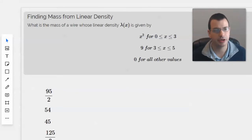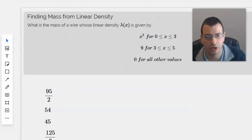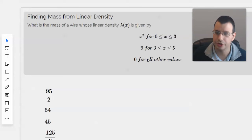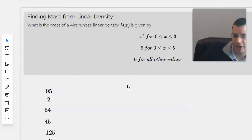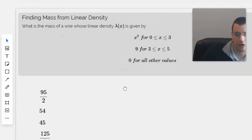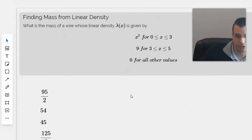Finding mass from linear density. What is the mass of a wire whose linear density λ(x) is given by x² for 0 ≤ x ≤ 3, 9 for 3 ≤ x ≤ 5, and 0 for all other values?